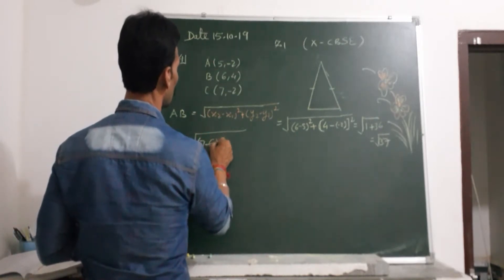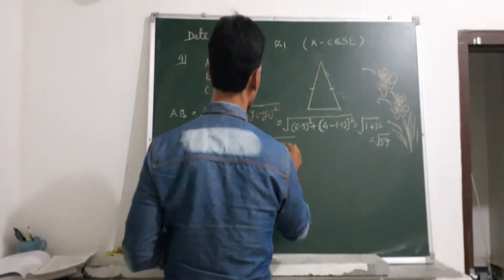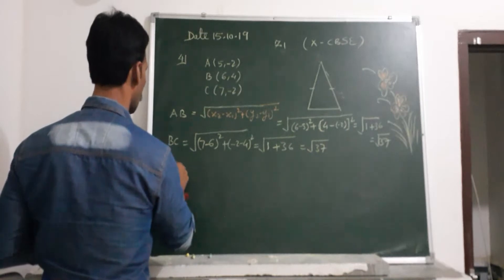BC means (7 - 6)² + (-2 - 4)². So (7 - 6) = 1, and -2 - 4 = -6. Then 1² + (-6)² = 1 + 36 = √37. Two sides are equal.